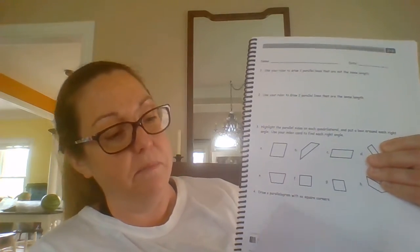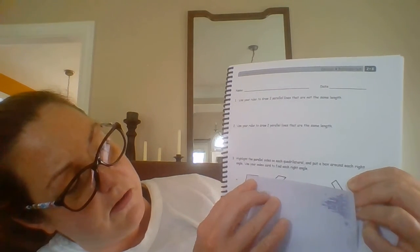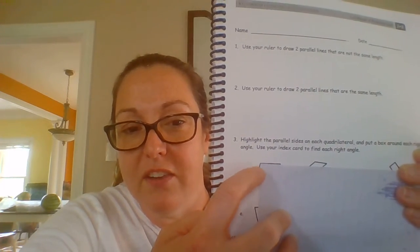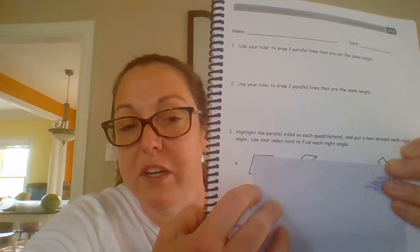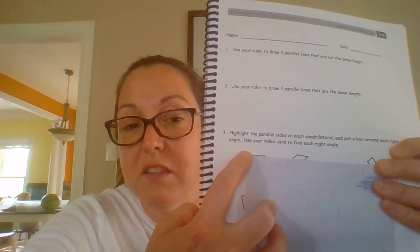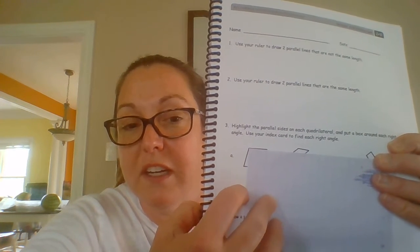You could use cardboard or a post-it note — anything with a square corner will work. What you're going to do is put this tool in the corner of a polygon. For example, if you put it in a corner and the side is not straight in line with the paper edge, it kind of comes out — that means this is not a right angle, not a square corner.